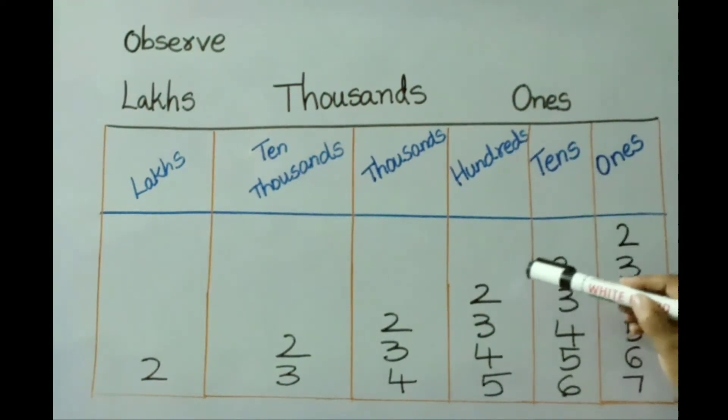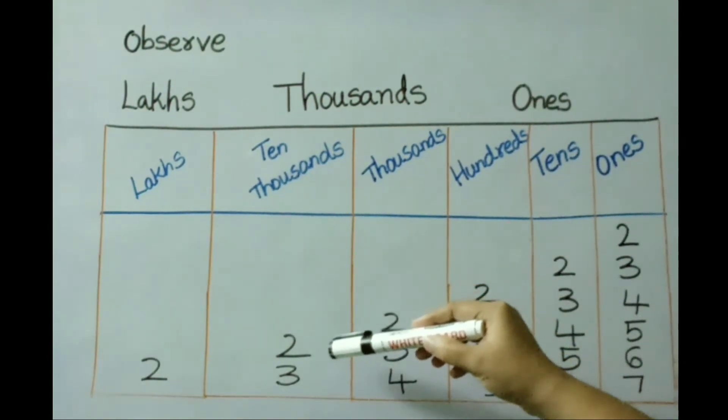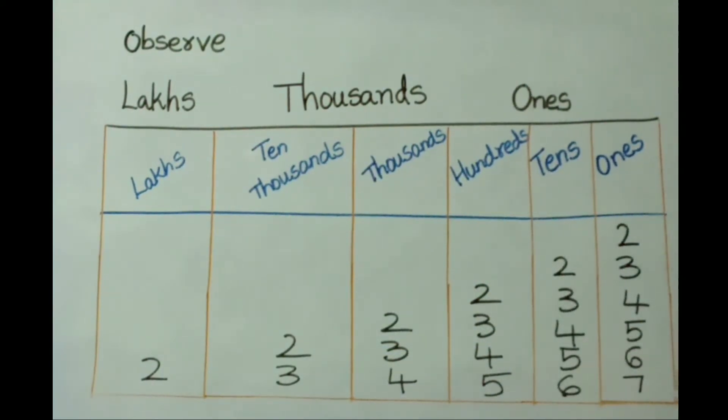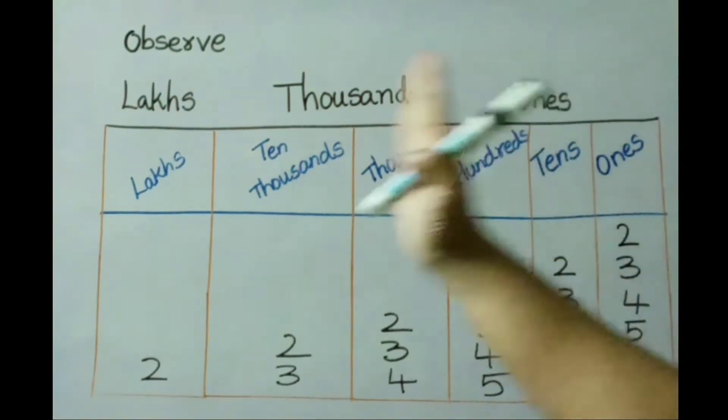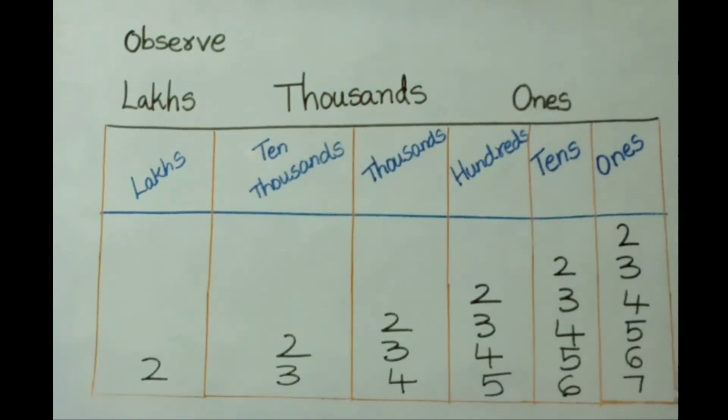See the next number 23,456. Here the value of 2 is 20,000. See the next number 2,34,567. Here 2 is present under lakhs place, so its value is 2,00,000. What we observe here is the value of each digit in a number depends upon its place. Proceeding from right to left, the place value increases by 10 times: 2, here 20, here 200. Each value is going to increase by 10 times.